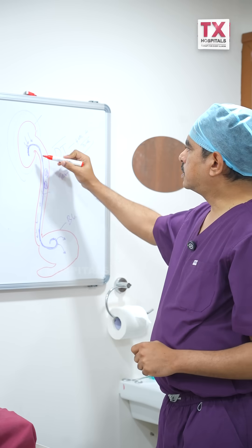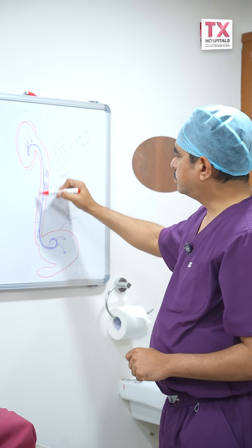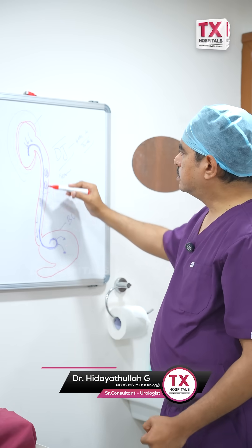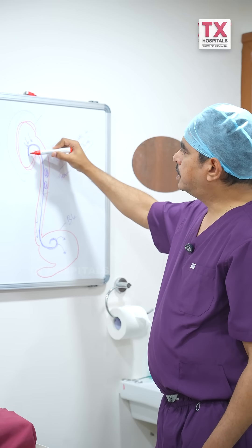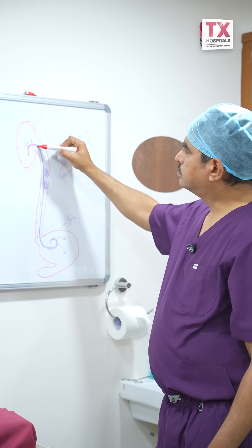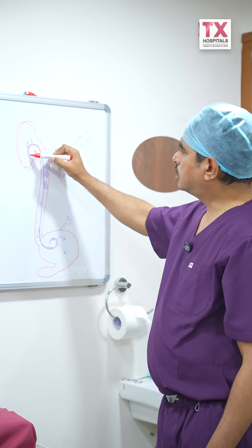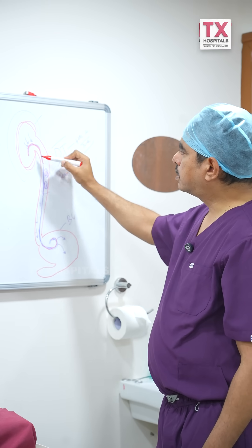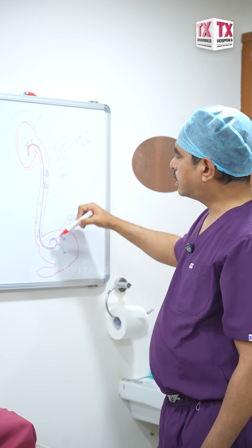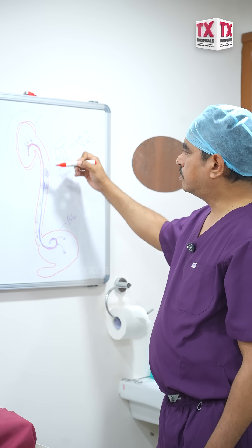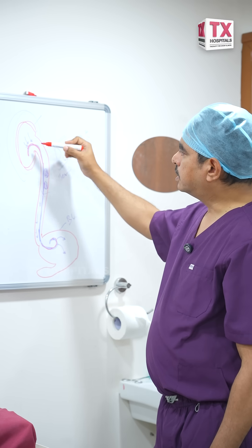This is the kidney, this is the ureter, this is the urinary bladder. The stent will be placed with one part in the kidney and the other part in the bladder. The shape of the part hanging in the kidney and bladder is a J shape. So we routinely call it a double J stent, and there are different reasons for it.